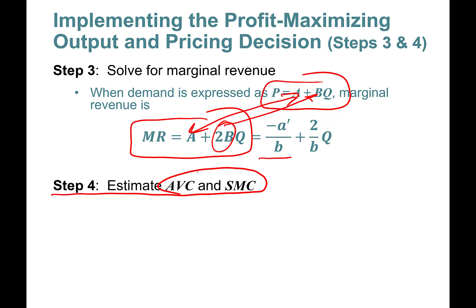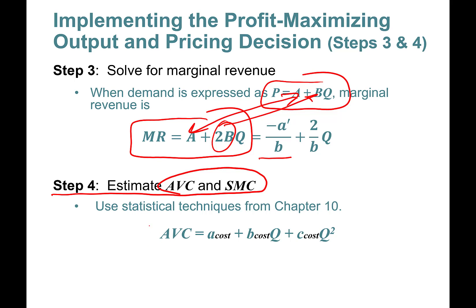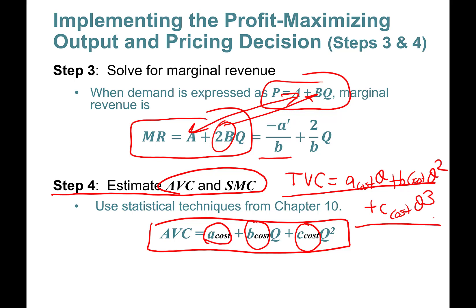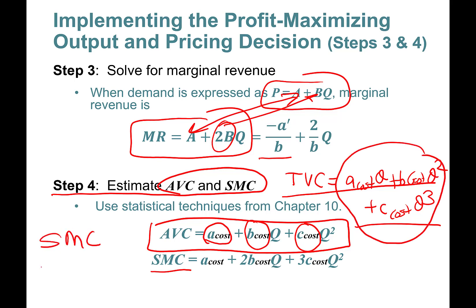Next step: estimate average variable cost and marginal cost using Chapter 10 techniques. Average variable cost has the formula: AVC = a_c + b_c·Q + c_c·Q². Total variable cost is therefore TVC = a_c·Q + b_c·Q² + c_c·Q³. Short-run marginal cost is the first derivative of total variable cost with respect to quantity: MC = a_c + 2b_c·Q + 3c_c·Q².